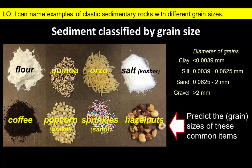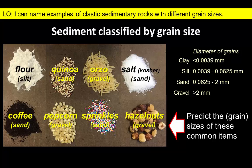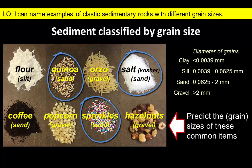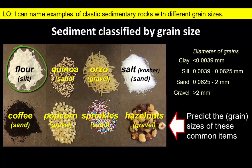Go ahead and try to complete the set by predicting the grain size of the other items. Pause the video if you need more time. We have three examples of gravel-sized particles, four equivalents for sand, and flour is approximately the same size as silt particles.